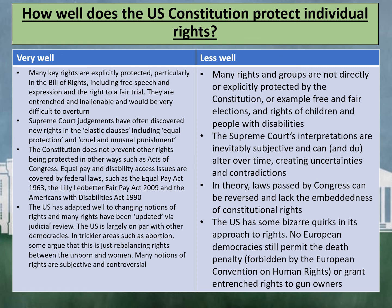In theory, laws passed by Congress can be reversed, highlighting the lack of embeddedness of constitutional rights. The US has some bizarre quirks in its approach to rights. There is no European democracy that still permits the death penalty; however, the US does grant entrenched rights to gun owners.